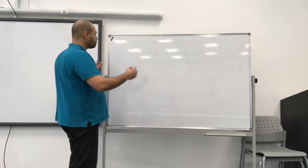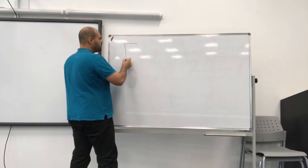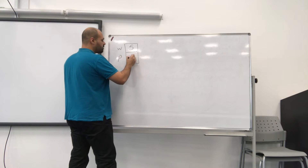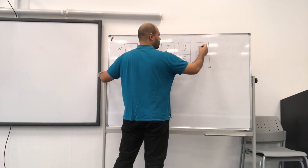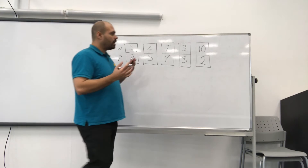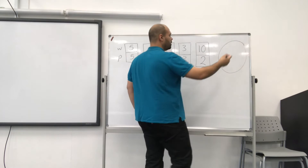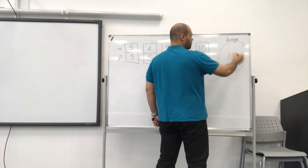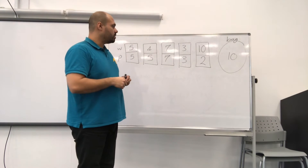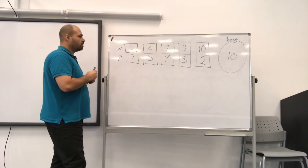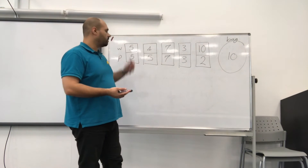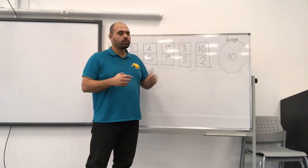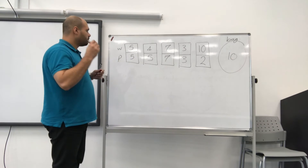Let's say we have five items: one item with size five and price five. We have a bag with a limit of 10 — I cannot have any item that weighs more than 10. Each of these items can fit: sizes are 10, 3, 7, 4, 5. But I want to maximize the value I put in this bag. So what options do I have?